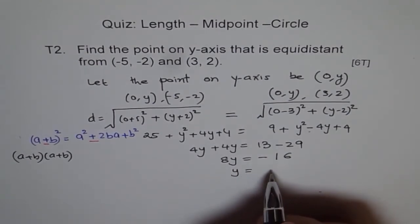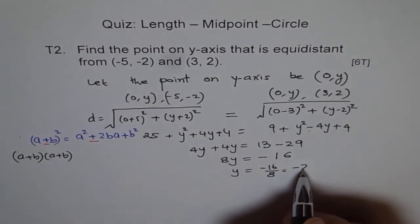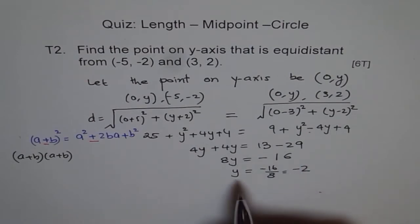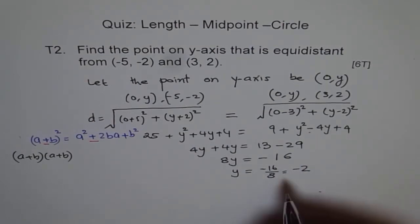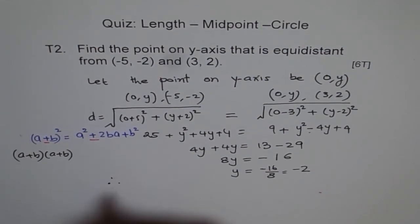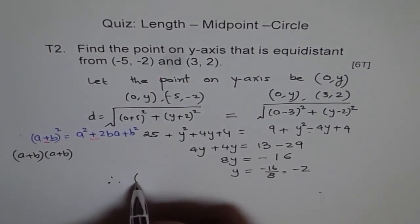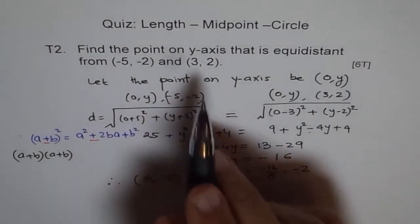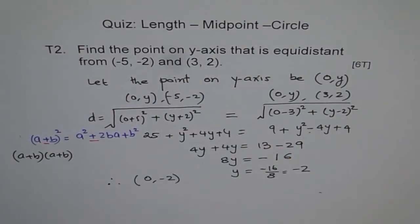Now y equals minus 2. Therefore the point is (0, y), so the point is therefore (0, -2) is equidistant from both the points. Okay, that is our answer.